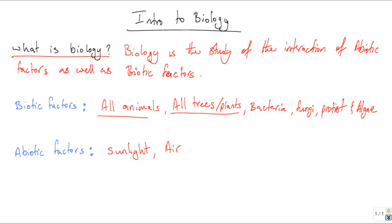For abiotic factors, that includes anything that is non-living. These factors are a necessity for all living things to exist, which is why it's important to study both biotic and abiotic factors. Abiotic factors include sunlight, which without you can have no photosynthesis. We have air, and to make it more specific, gases that are useful such as carbon dioxide and oxygen. Carbon dioxide is used to make glucose, and oxygen is used in aerobic respiration. Other gases that may be important include nitrates.